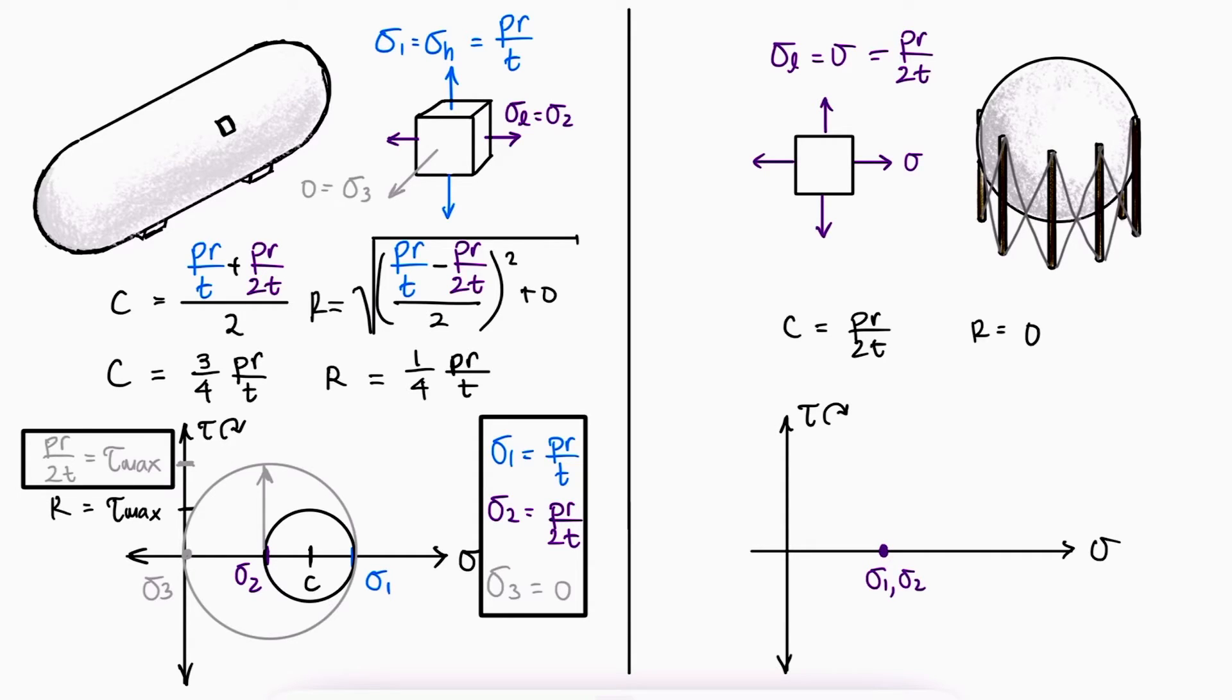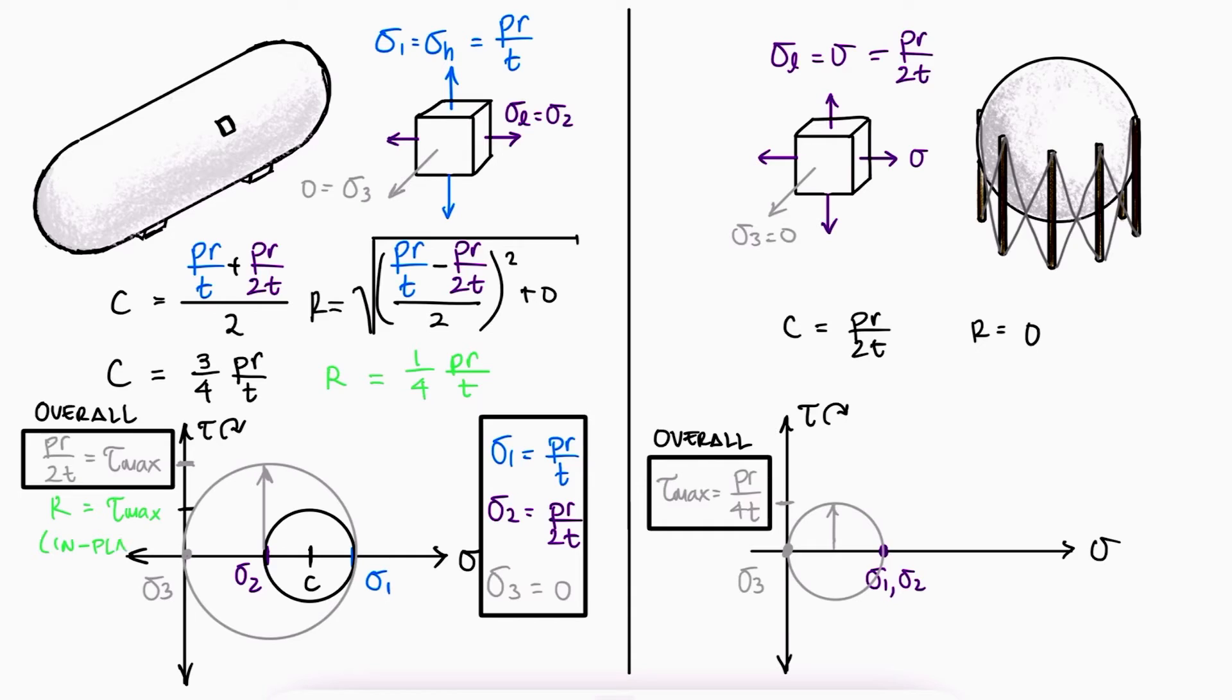Of course, and once again realizing that the third stress in the third dimension is zero, the encompassing circle would go from zero to pr over 2t. This means that the radius of the circle is pr over 4t, which corresponds to the maximum shearing stress, and this is the overall maximum stress, not the in-plane max shearing stress, which in this case is zero.